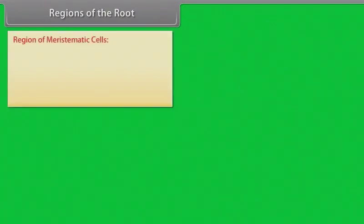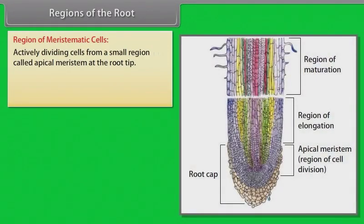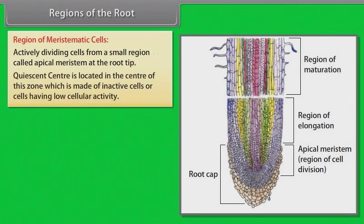Region of meristematic cells: Actively dividing cells form a small region called apical meristem at the root tip. Quiescent center is located in the center of this zone, which is made of inactive cells or cells having low cellular activity.